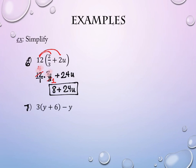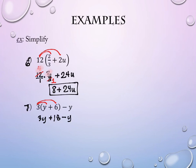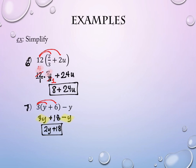On number seven, we've got distribution and then subtraction after that. We distribute the three through first, which gives 3y plus 18, and then we still have the minus y at the end. Then we combine the 3y and the negative y, which gives 2y, plus 18. It's two steps on that one.